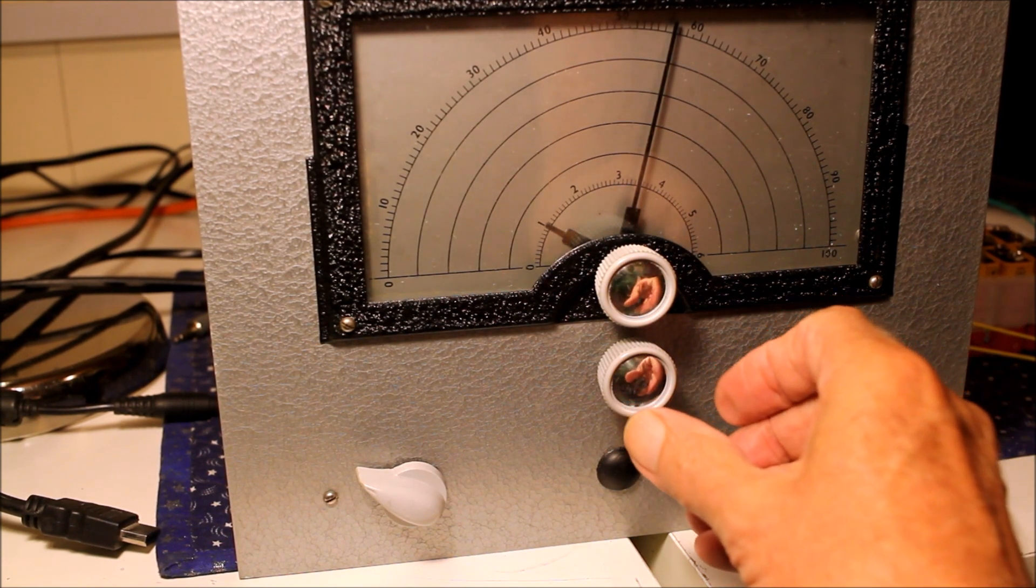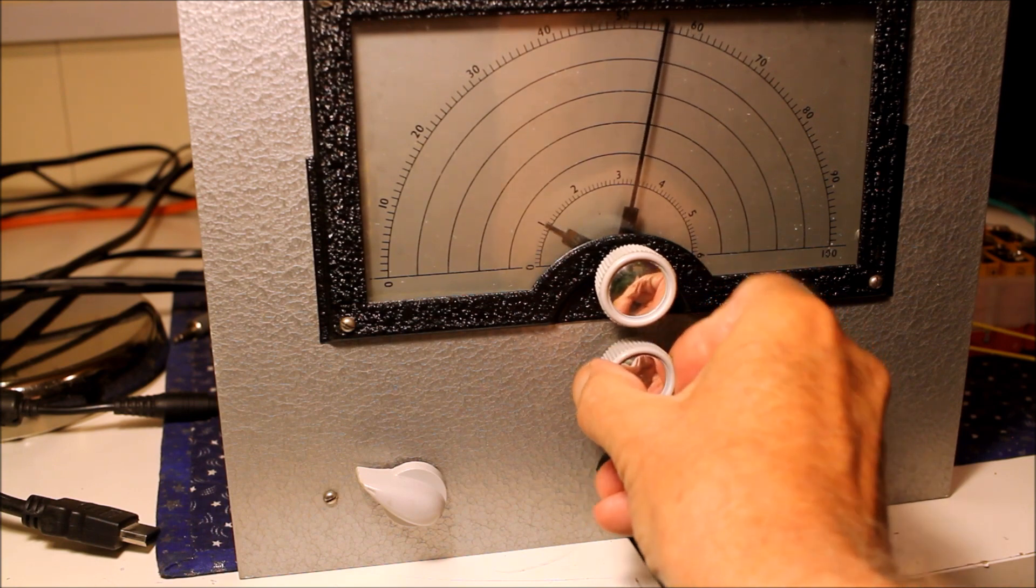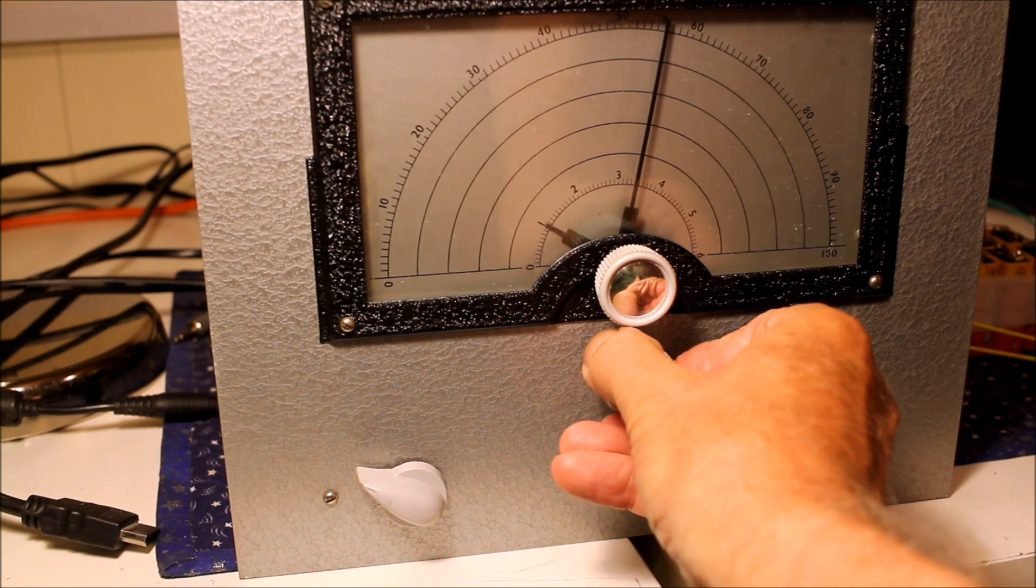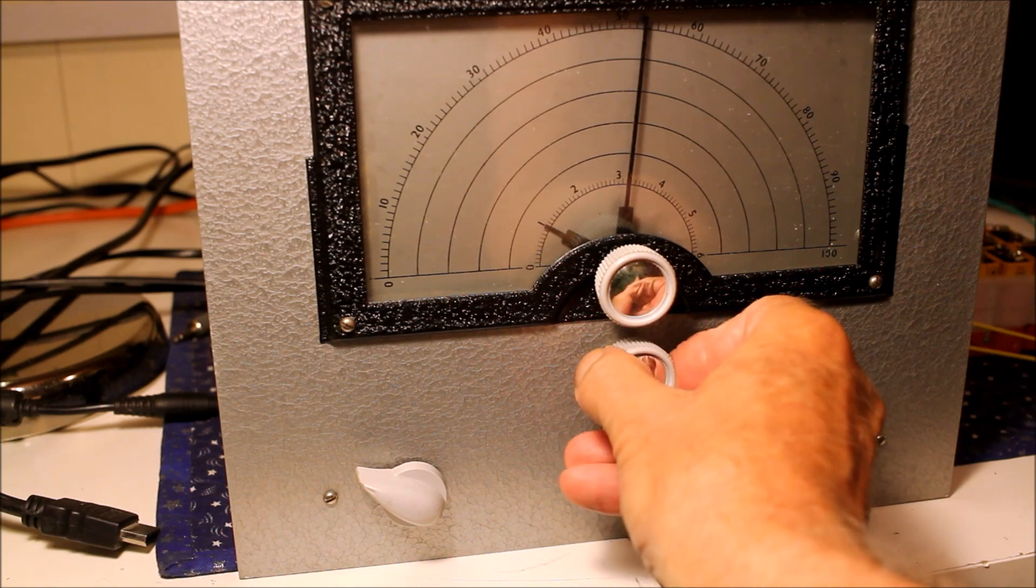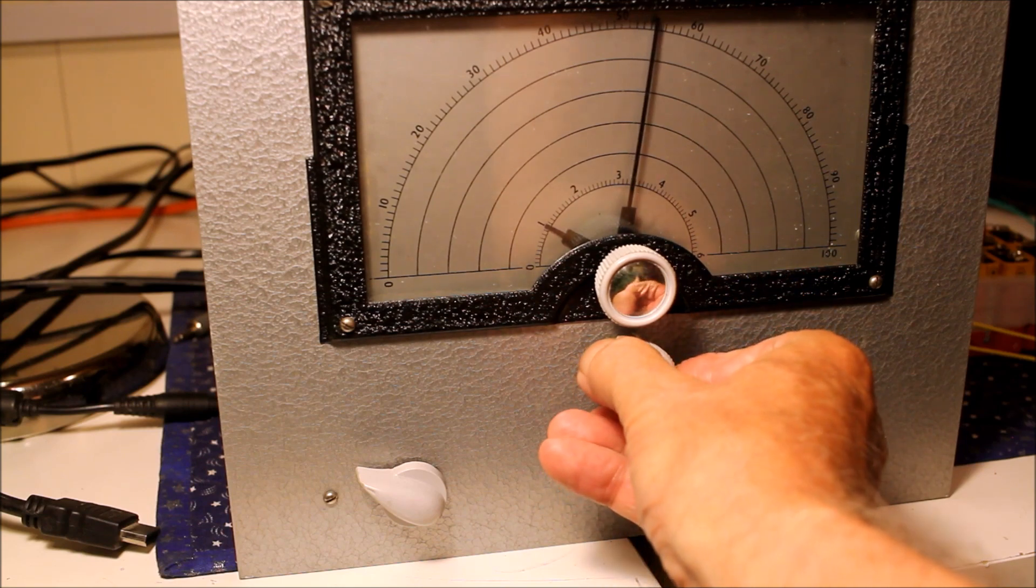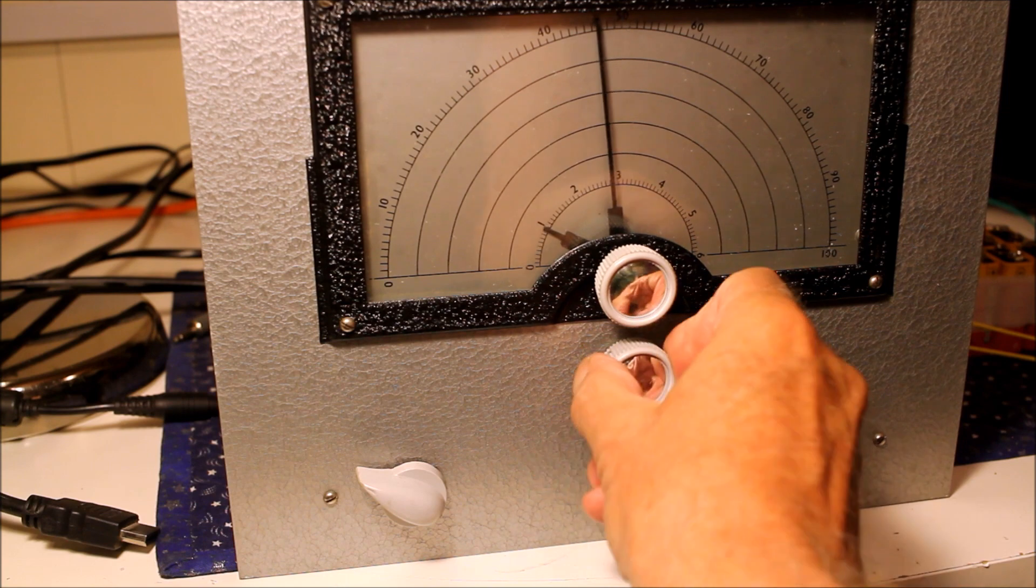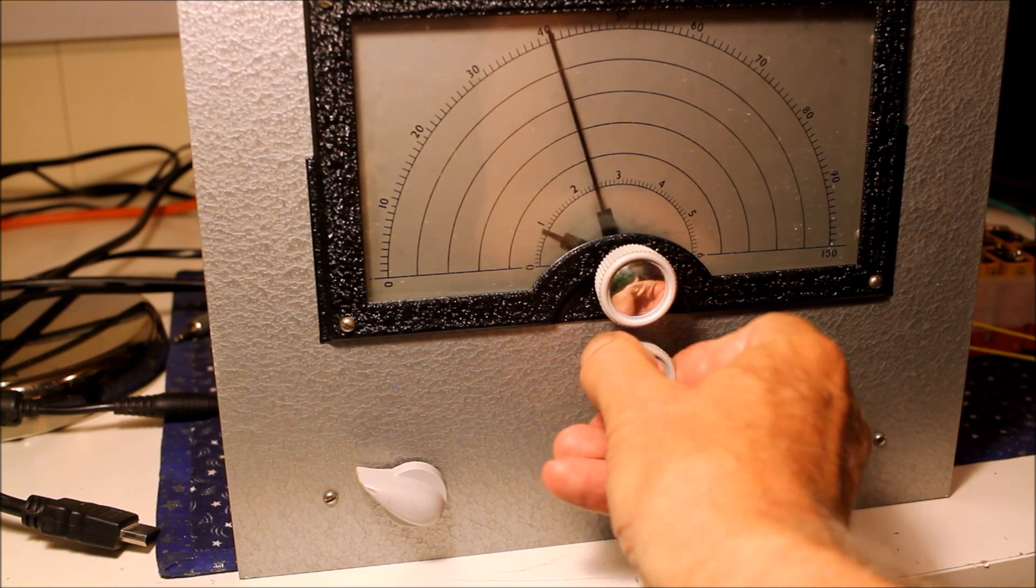Here we are on the Morse end of 80 meters. Pretty good, actually. Pretty sensitive, like most regens. There's the FT8 signal there—I think I'll decode that. And the sideband is up this end of the band.